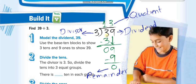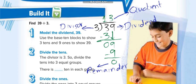Then the next step: 3 minus 3 equals 0, so we finish the first digit. Now we bring the 9 down to divide. 3 times what equals 9? 3 times 3 equals 9. Then 9 minus 9 equals 0. So the remainder is 0 and the quotient is 13.